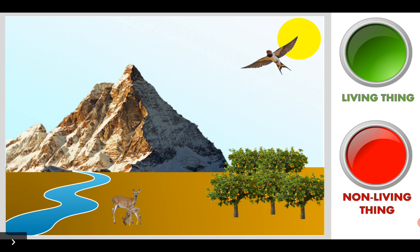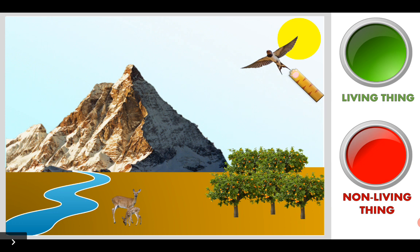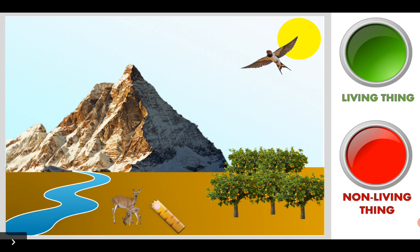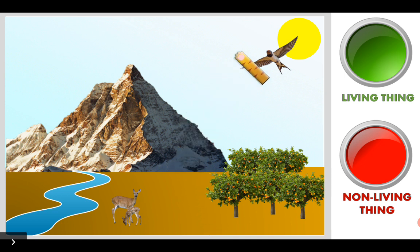It's very beautiful, isn't it? Now we have got a mountain, a swallow bird, five trees, a river, two deer, soil, and the sun.